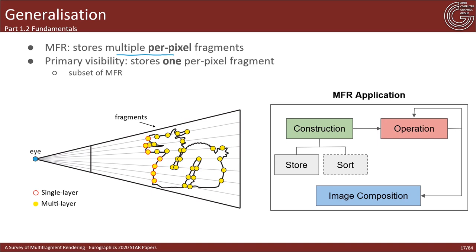Primary visibility determination is a subset of MFR — it processes multiple per-pixel fragments but stores and operates on only the closest one, while the MFR pipeline operates on and stores an arbitrary number of fragments. At the conceptual level, the MFR pipeline is responsible for generating, storing, processing, and evaluating information from all incoming fragments. This pipeline comprises three main steps: construction, one or more operations applied on the fragment sets, and finally image composition.